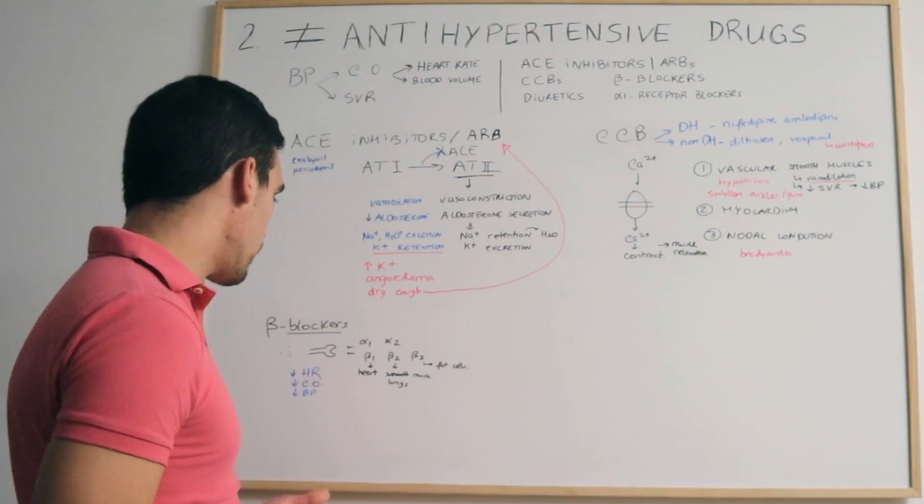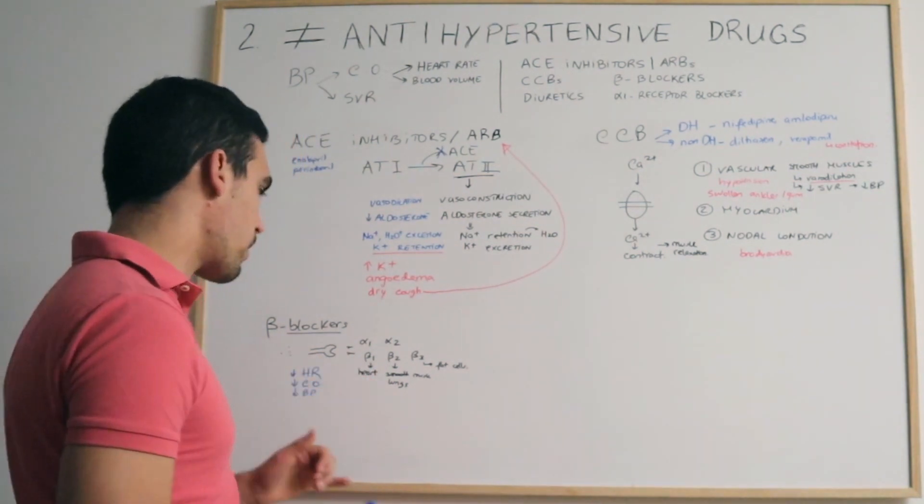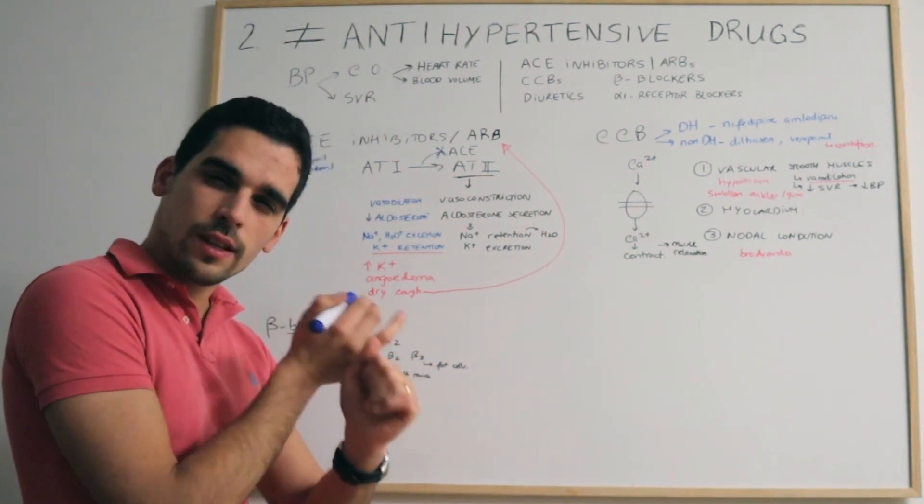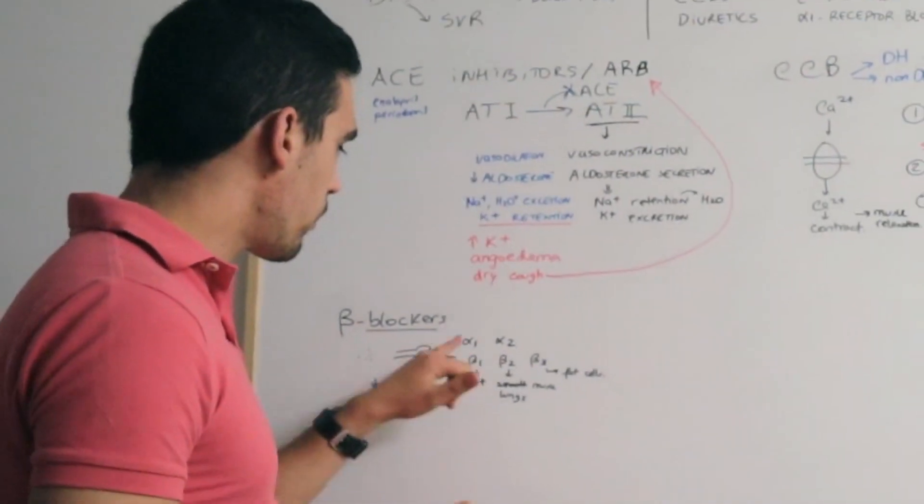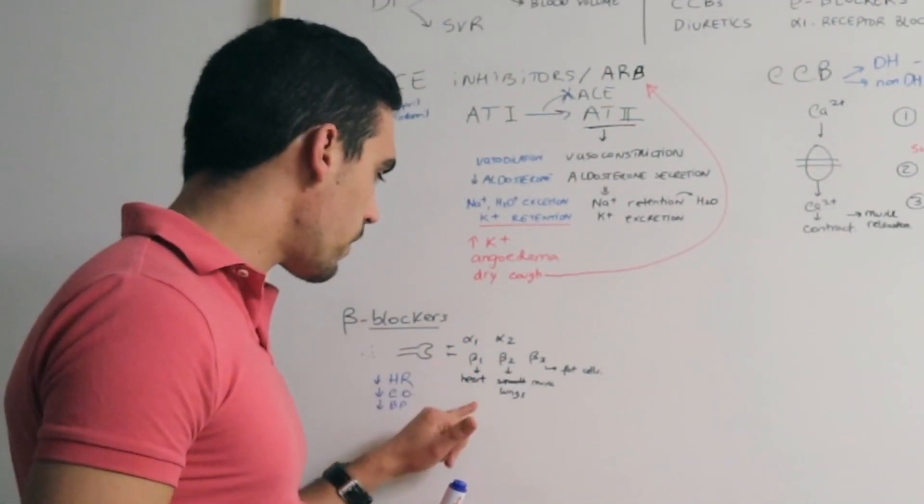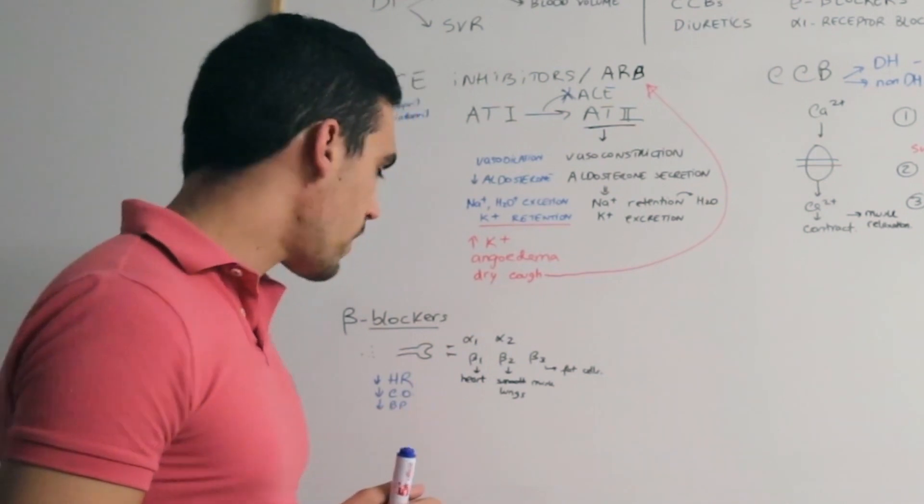We have different classes, different types of beta blockers. We have the beta blockers that are cardioselective, so they only block on the heart. They are selective for the beta-1 receptors.